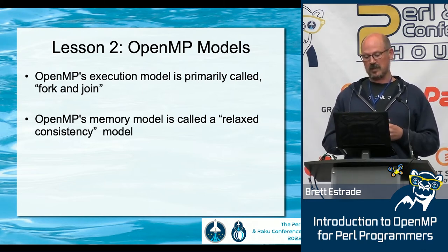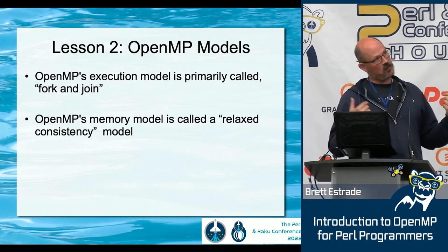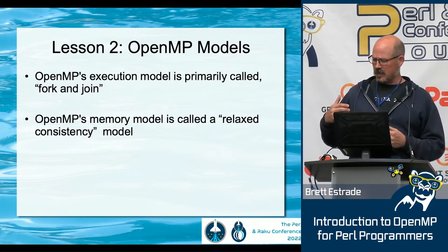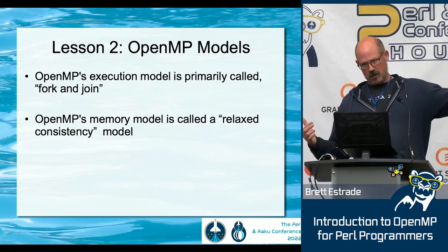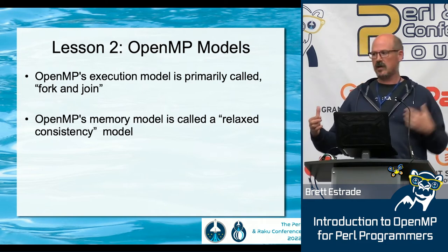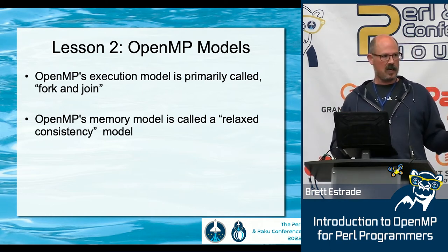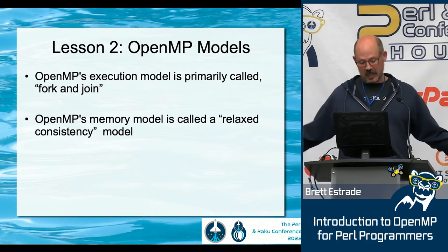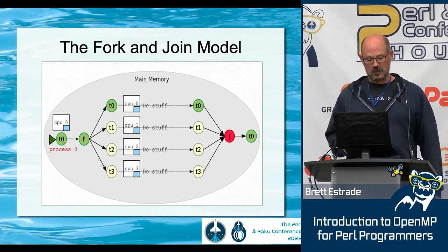OpenMP also has a memory model called relaxed consistency. The memory model defines how you can think about guaranteeing that when shared memory is updated, a thread reading it will get the latest value — even if it's on a CPU way on the other side of the motherboard. It's about what memory safety guarantees you have on executing programs. This is a picture of the fork-and-join model: one CPU, it forks into some number of threads, they do their work, then come back together in a join, and the parent process continues on.